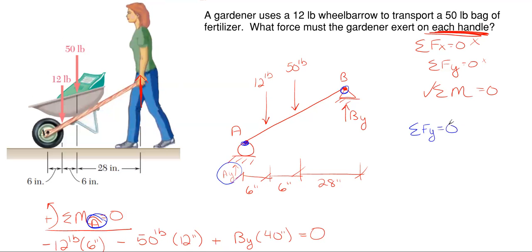A sub y is not super hard to get if we just sum forces in our Y direction. Everything in blue will be our check. If we sum forces in the Y direction, up as positive, we have A sub y minus 12 pounds minus 50 pounds plus the total at B_y which is 16.8 pounds, all equal to zero. A sub y pops out to be 45.2 pounds in the upward direction.